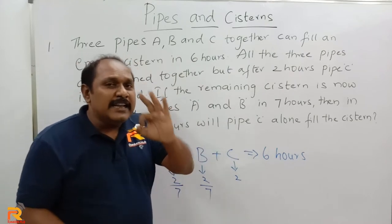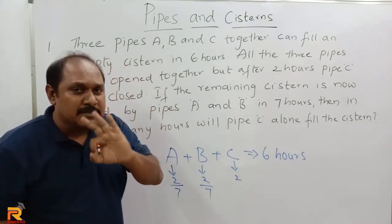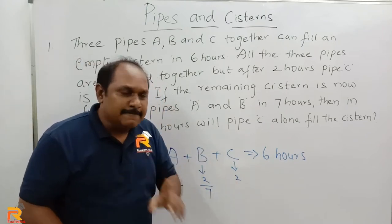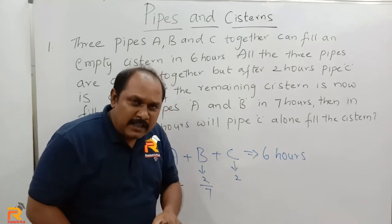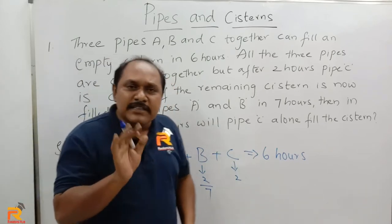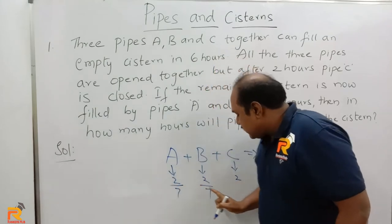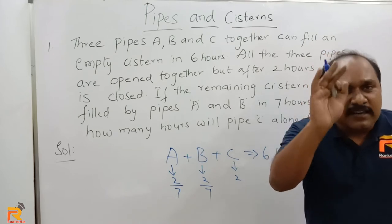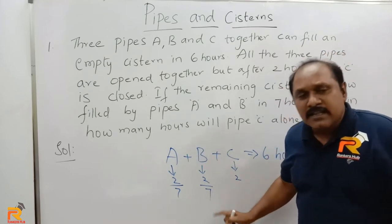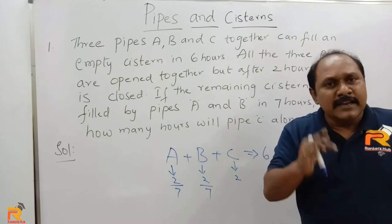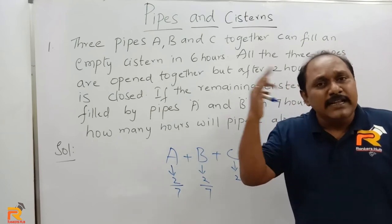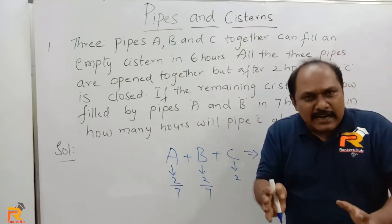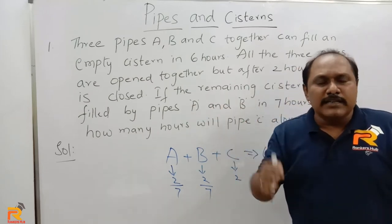In that extra three hours, A and B are doing the work left by C. C should have been open for six hours but was only open for two hours — so C left four hours of work undone. The work that should be done by C in four hours is done by A and B together in the extra three hours. So whatever work A and B together do in three hours, C will take four hours.